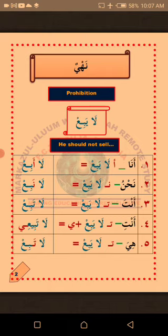'He' in Arabic is hua, which is the opposite of hiya — 'she.' So how do we now change the verb la-yabi' to suit the following pronouns? Wahid, number one: Ana — I. So how do we change the verb la-yabi' to suit Ana?